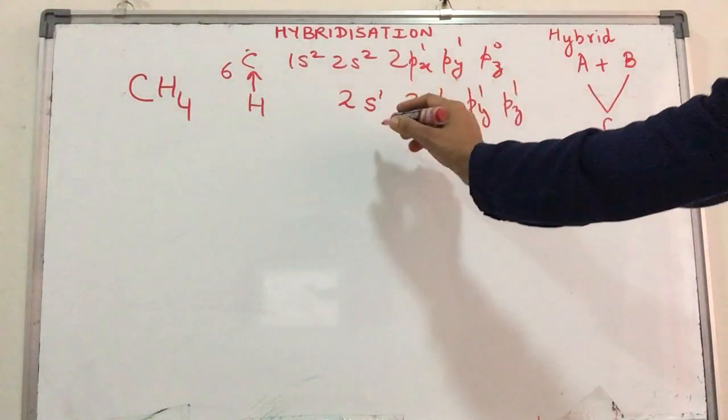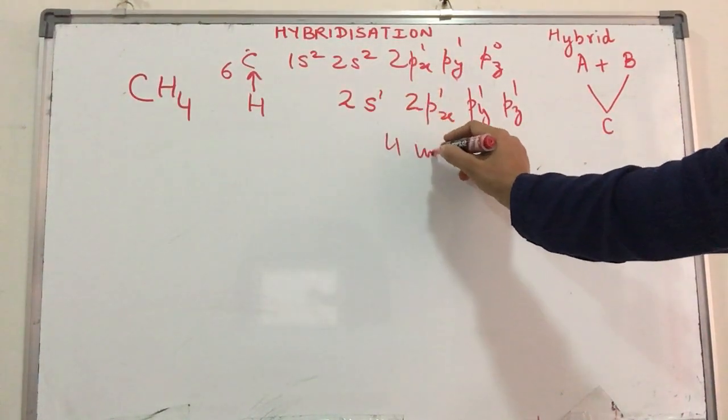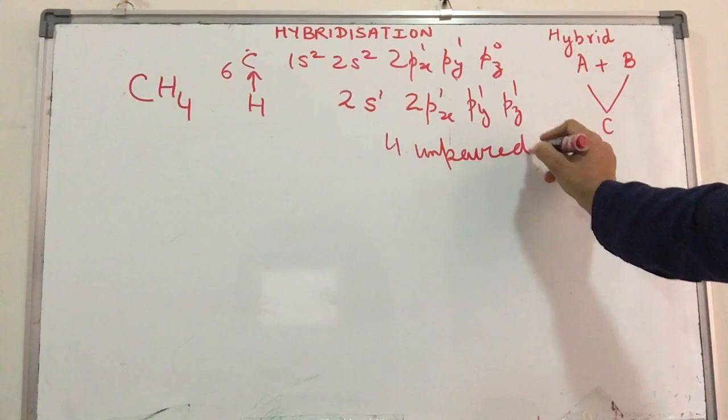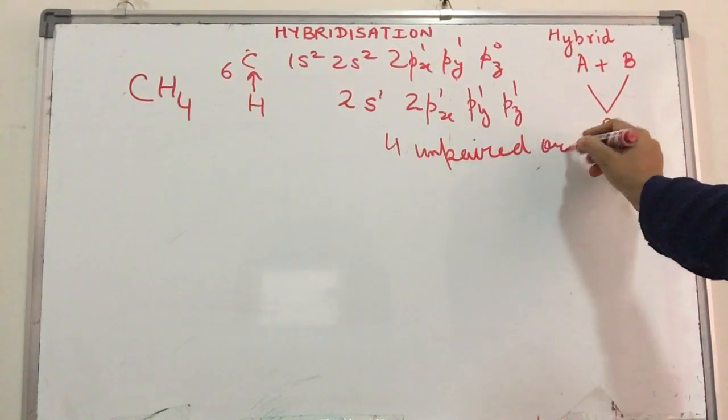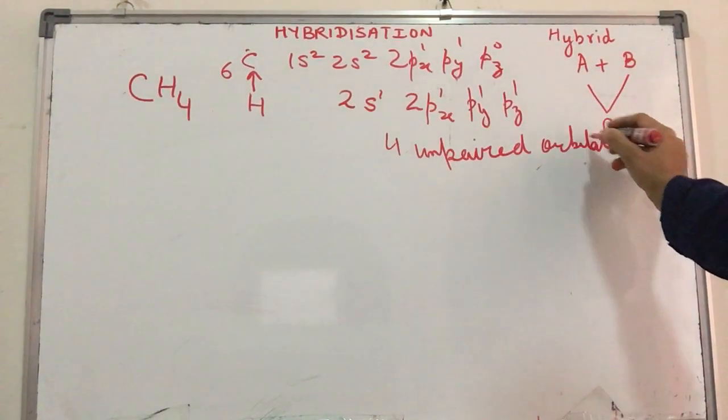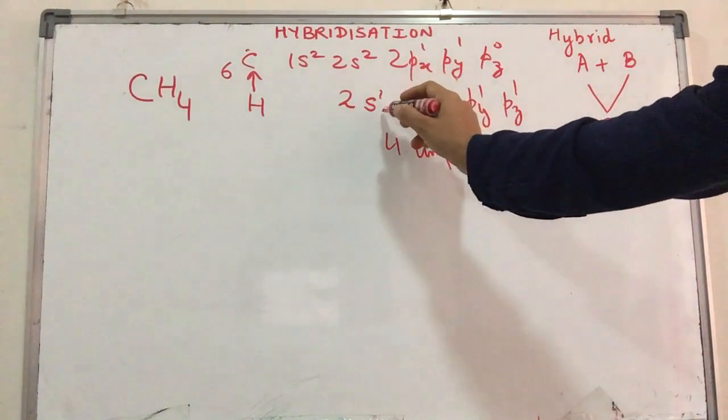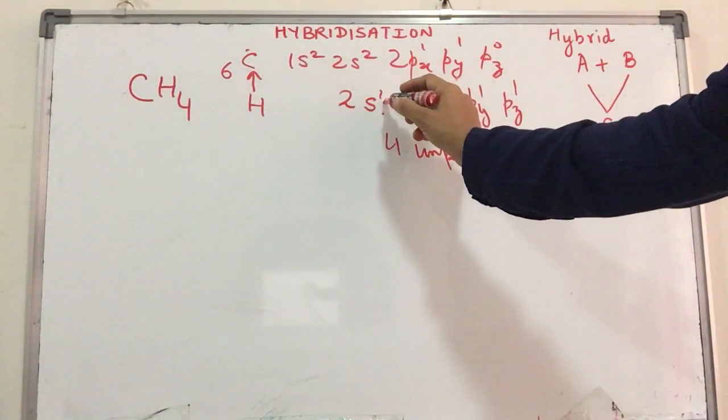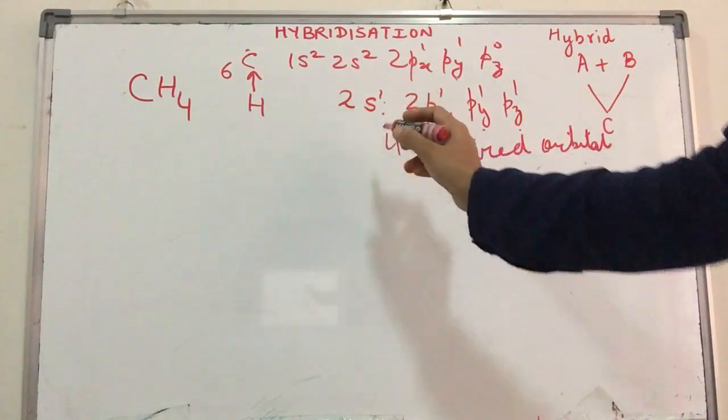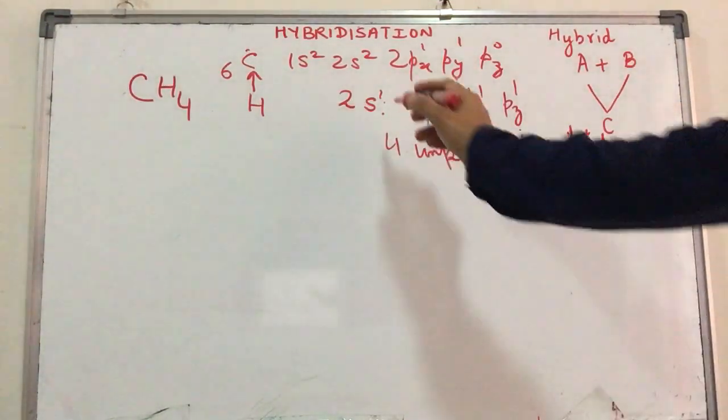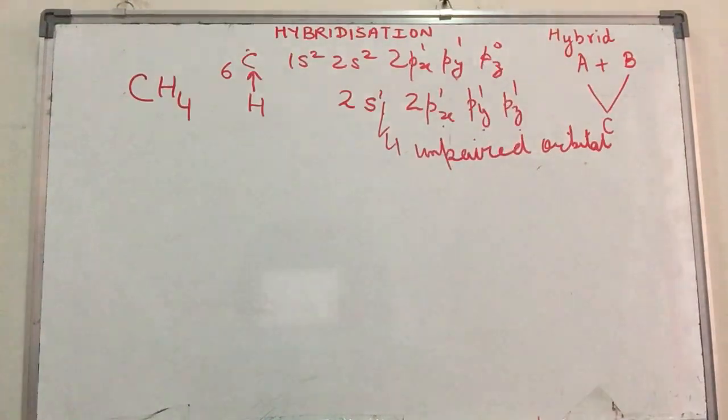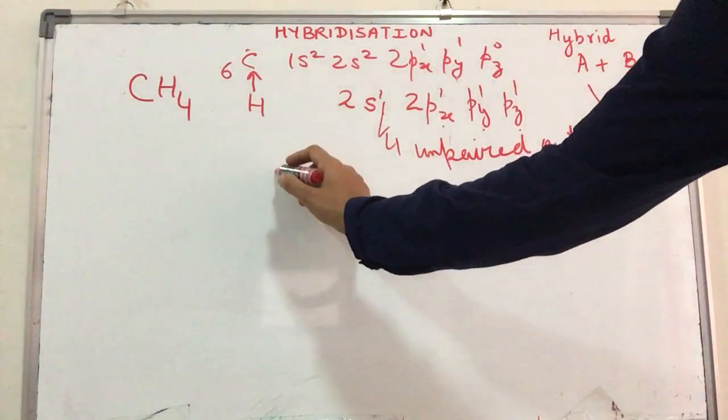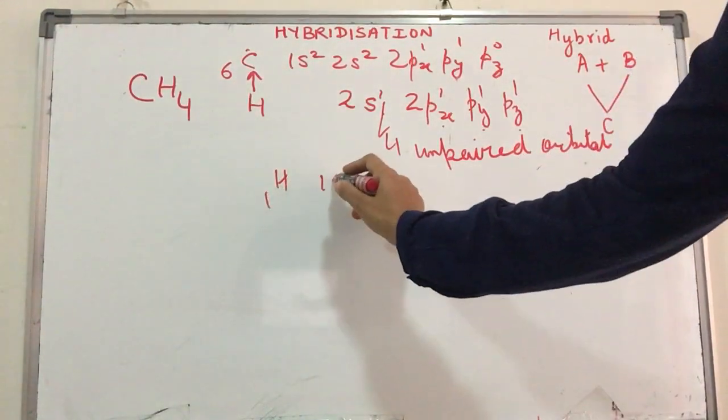Now there are four unpaired electrons. In other words, carbon can undergo four bond formations. If I talk about a hydrogen and 2s¹ overlap, there's an SS sigma bond because hydrogen's electronic configuration is 1s¹.